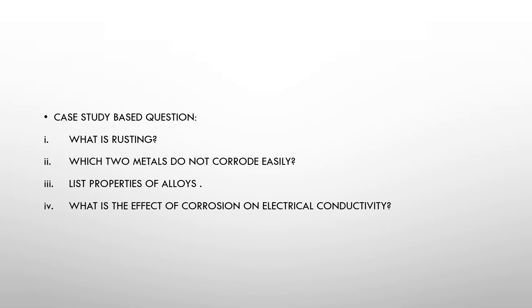This is a case-based question. Please listen carefully to the passage. Corrosion is the phenomenon of deterioration of the surface of metal in the presence of air and moisture. It is a natural process, and in the presence of a moist atmosphere chemically active metals get corroded — this is an oxidation reaction. Rusting is the process where iron corrodes due to exposure to the atmosphere.